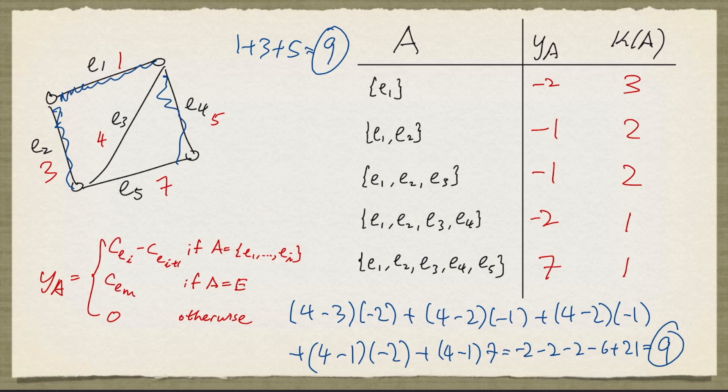And so this shows that this tree is indeed of minimum weight. So we didn't have to know that Kruskal's algorithm returns a minimum weight spanning tree. These calculations here show that this tree is indeed a minimum weight spanning tree.